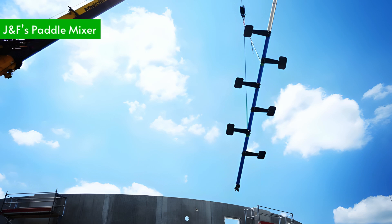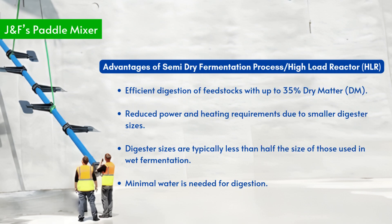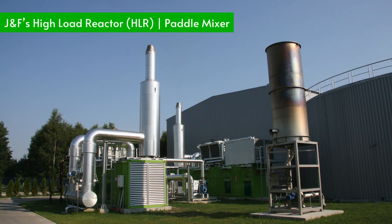In addition, J&F's paddle mixers play a crucial role in ensuring the efficient mixing of the feedstock within the digester. These mixers promote uniform distribution of heat, nutrients, and microorganisms, enhancing the digestion process. By improving the uniformity of the feedstock, the paddle mixers help reduce the formation of gas pockets and increase overall biogas production efficiency. The combination of J&F's high-load reactor technology and the paddle mixers optimizes the digester's performance, providing a stable and efficient biogas production system.